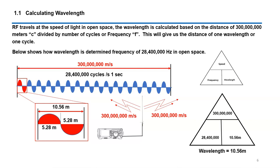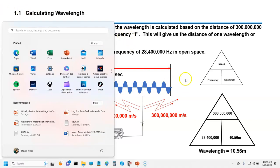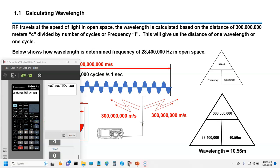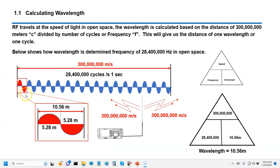RF travels at the speed of light in open space. The wavelength is calculated based on 300 million meters per second — lowercase c — divided by the frequency and number of cycles, giving the distance of one wavelength. For example, using the calculator: 300,000,000 divided by 28,400,000 gives us a wavelength of 10.56 meters. Essentially, there are 28,400,000 cycles occurring over a distance of 300 million meters, all moving at the speed of light in one second.